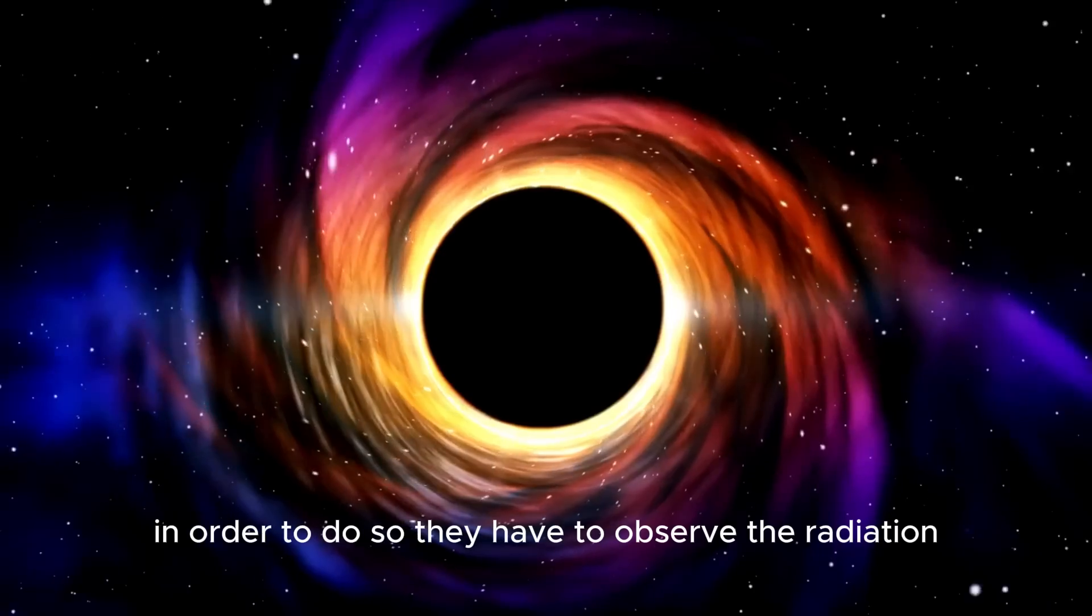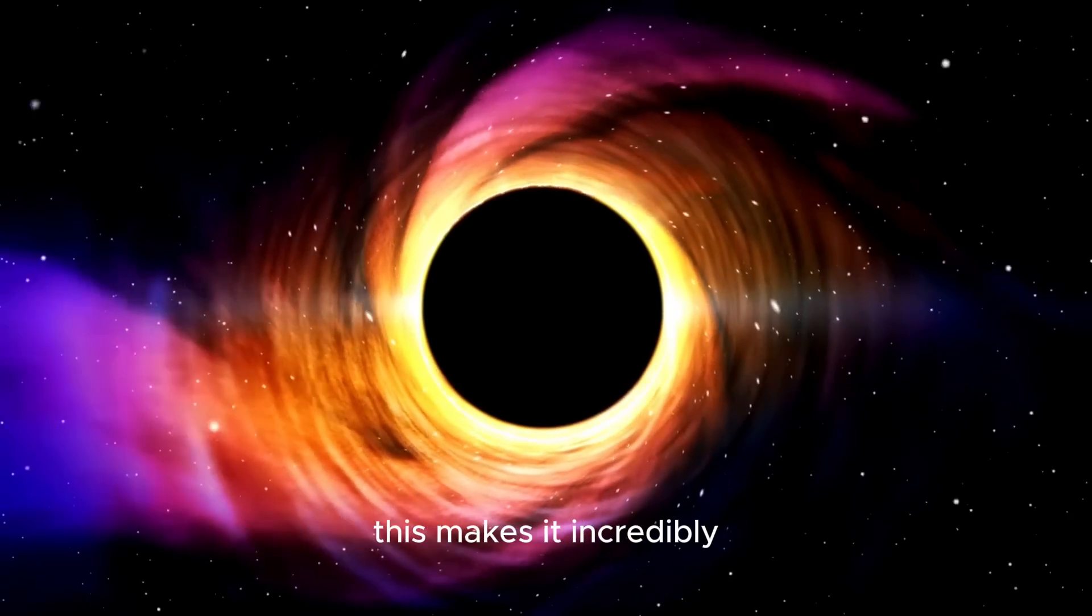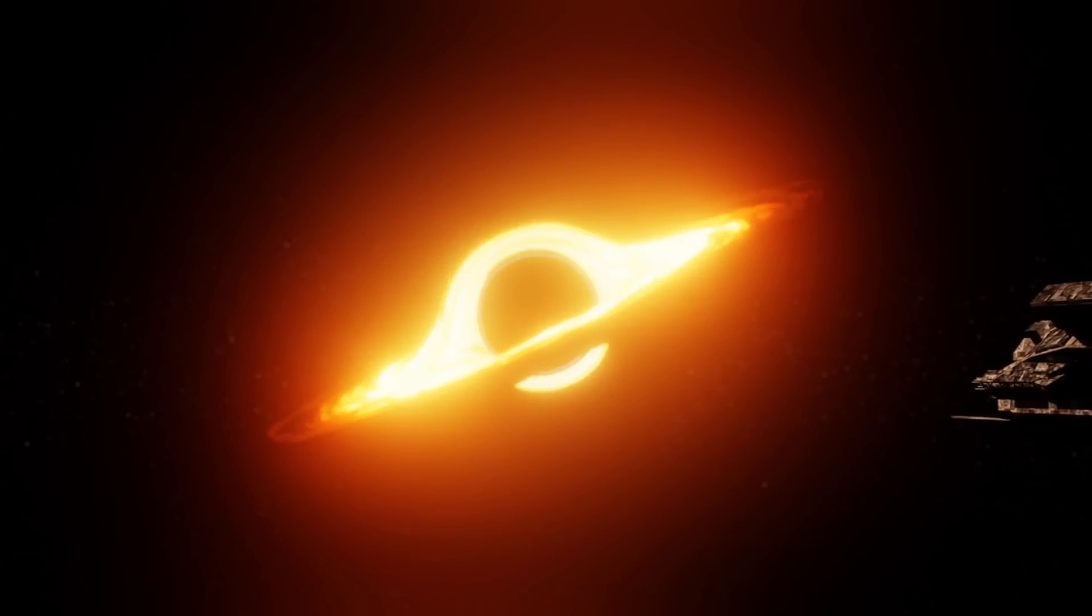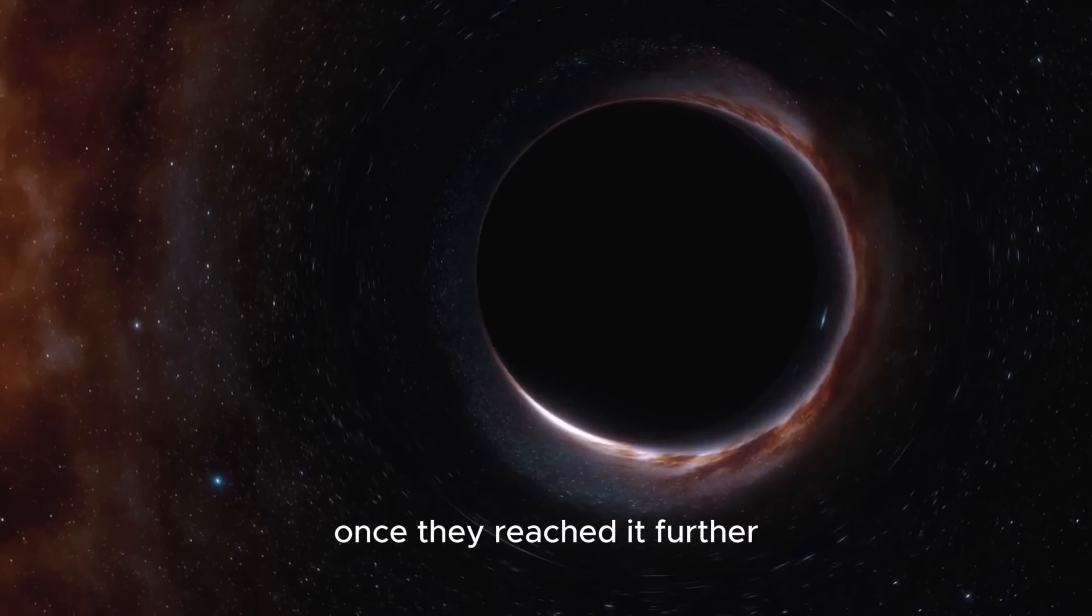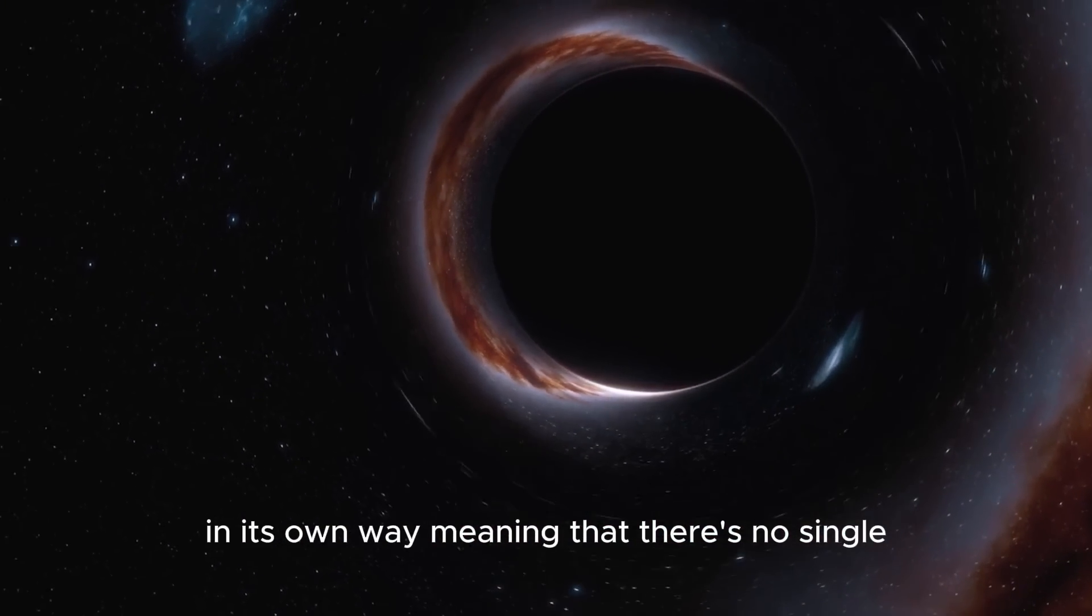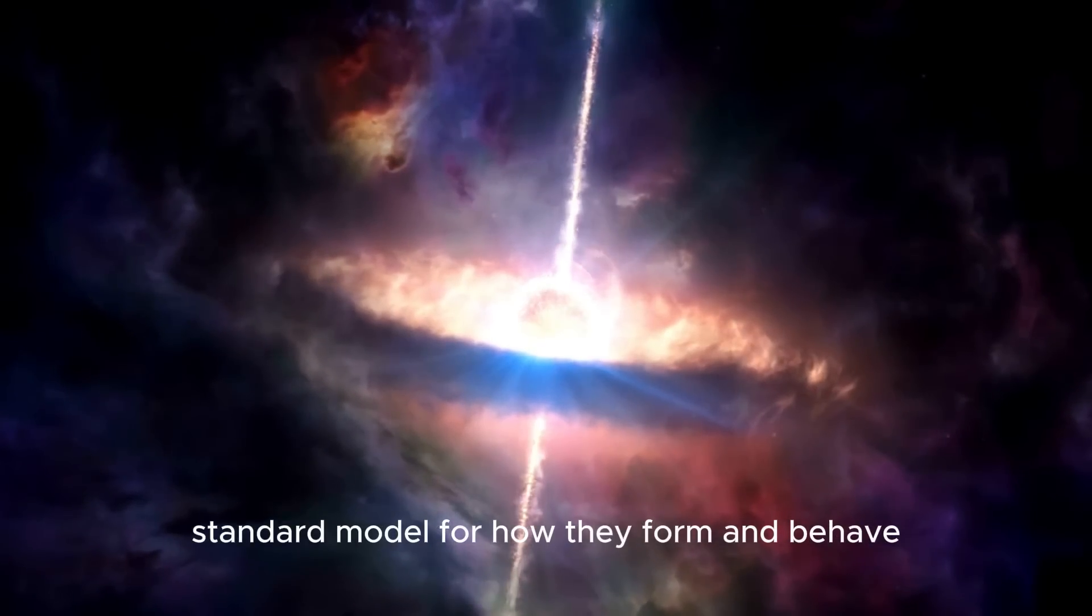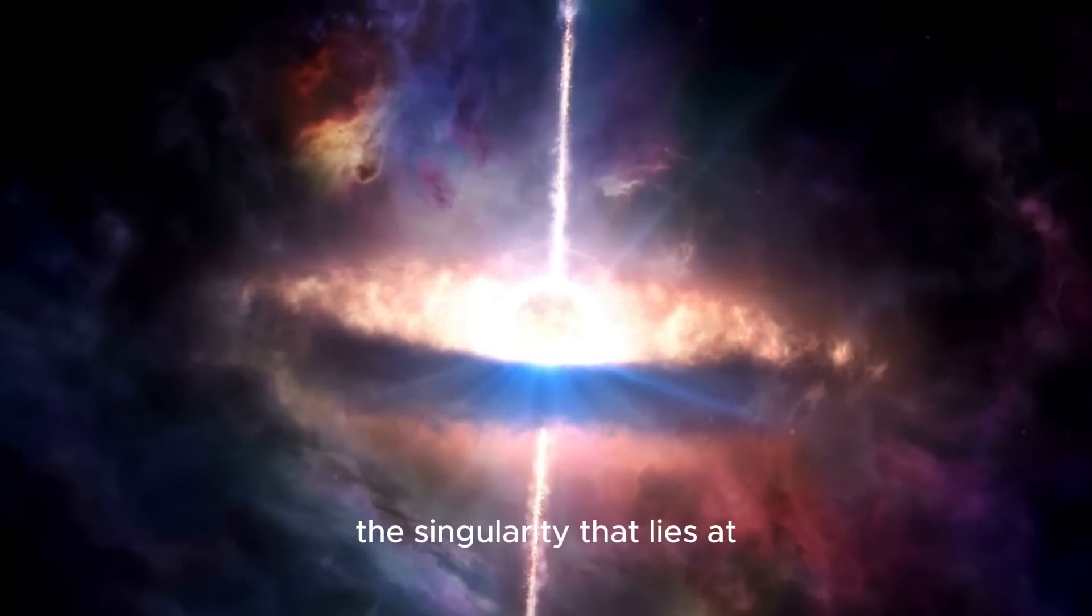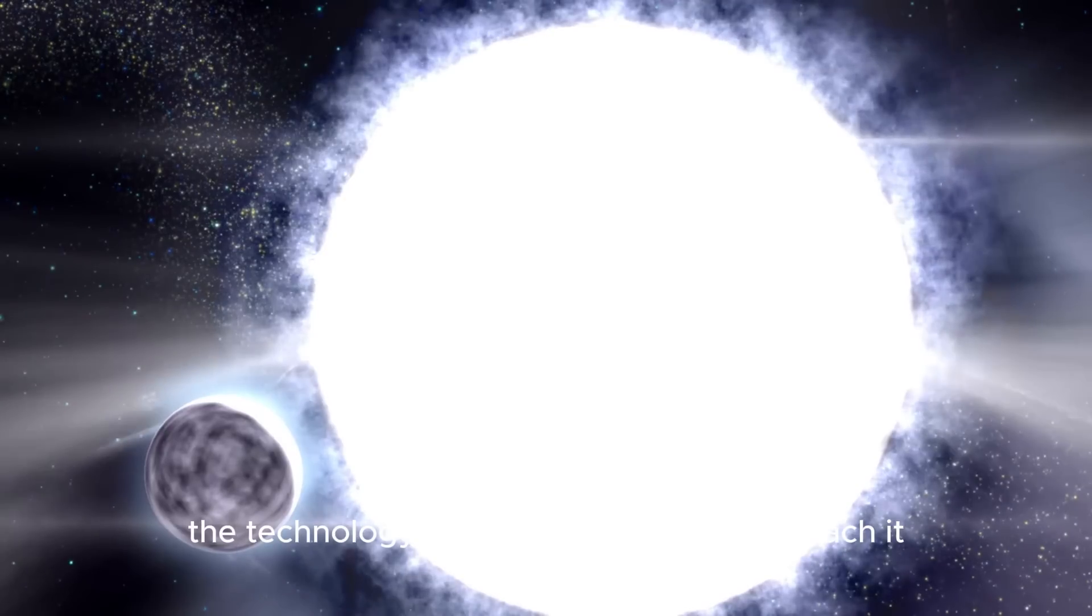In order to do so, they have to observe the radiation the black holes emit and the dust and gas that surround them. This makes it incredibly difficult to create a detailed image of what's inside the black hole, as any probes or cameras sent out into space would be instantly crushed by the event horizon once they reached it. Further complicating matters is the fact that every black hole is unique in its own way, meaning that there's no single standard model for how they form and behave.